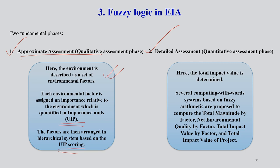In the detailed assessment phase, the total impact value is determined and several computations take place with the system based on fuzzy arithmetic: total magnitude by factor, net environmental quality by factor, total impact value by factor, and total impact value of project. These are the differences between approximate assessment and detailed assessment under fuzzy logic of EIA.